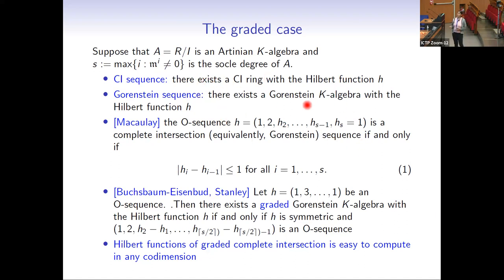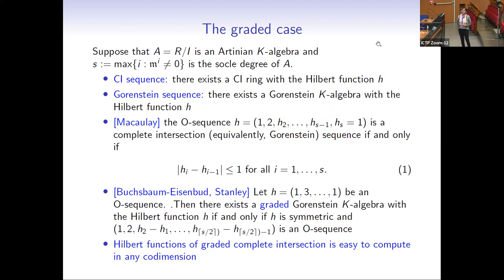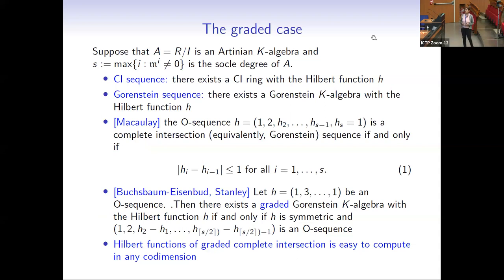Macaulay, in a classical result, classified the numerical sequences that can occur as the Hilbert function of a complete intersection algebra or a Gorenstein k-algebra in the codimension 2 case. He proved that a sequence of the form 1, 2, ... is a Gorenstein sequence if and only if the difference between successive H_i terms is at most 1. This result has been known since long.